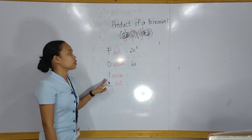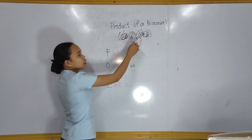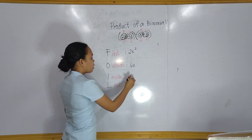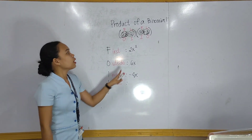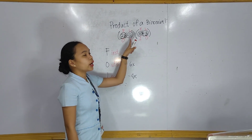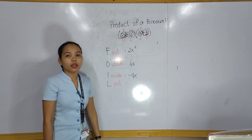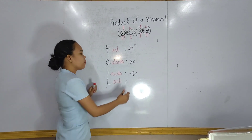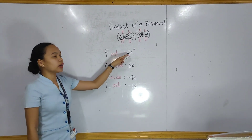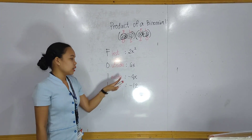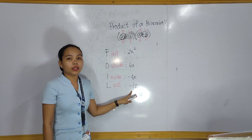Next, we will find the Inside. Negative 4 times x gives us negative 4x. Now for the Last terms, we have negative 4 and positive 3. Negative 4 times positive 3 gives us negative 12. So we now have: First = 2x squared, Outside = 6x, Inside = negative 4x, and Last = negative 12.